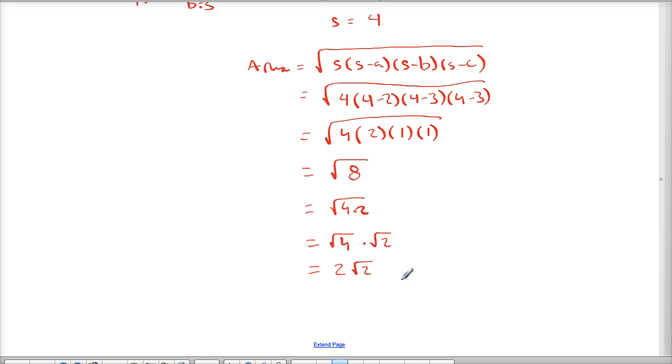So really our final answer is 2 times the square root of 2 square units, or 2 radical 2 square units, would be our final answer for the area of this triangle here with the three sides given to us.